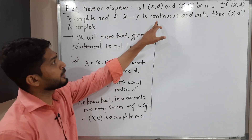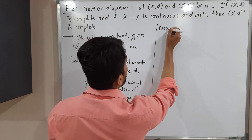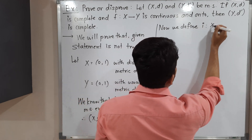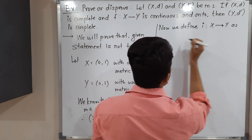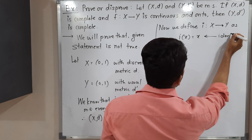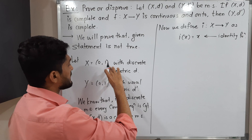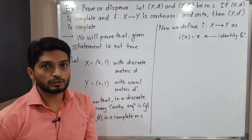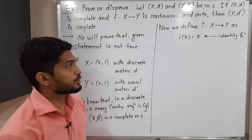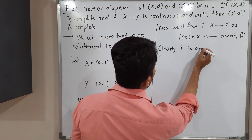Next, we want a function which is continuous as well as onto. We define a function i from X to Y as i(x) = x — the identity function. Since X and Y are the same set, we can define the identity function in this way. Clearly, i is an onto function.